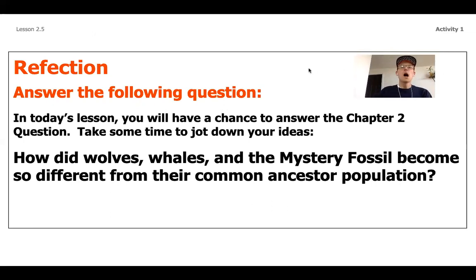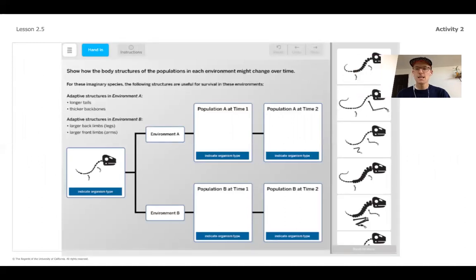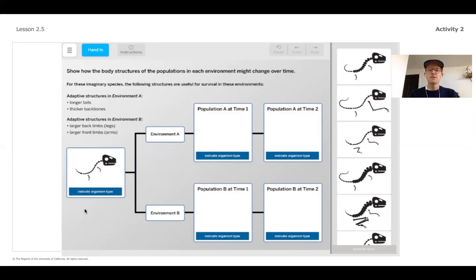Hopefully you had some good time to think about what is causing these species to end up becoming different over those millions and millions of years. What we're going to be thinking about to start off today is we're going to be looking at a mini simulation in Amplify. We're going to pull up this simulation together. I know we go over this a lot, but remember — if you are going through these by yourself and thinking independently, it really provides you with the best learning opportunity possible.